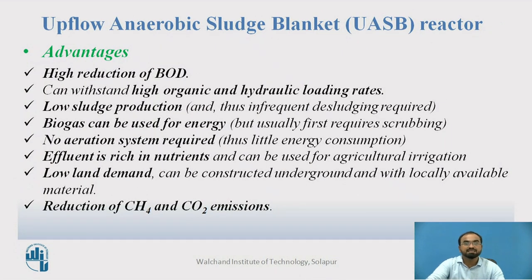Let us see its advantages. It has very high reduction of BOD. It can withstand high organic and hydraulic loading rates. Low sludge production — only 5% — means infrequent desludging is required. The biogas can be used for energy. No aeration system is required, so automatically less energy consumption is needed for running UASB. The effluent is rich in nutrients and can be used for agricultural irrigation. Low land demand as it is typically constructed underground, so the surface area required is very much lesser. It also requires locally available materials for construction, reducing construction costs. There is also reduction of CH4 and CO2 emissions.